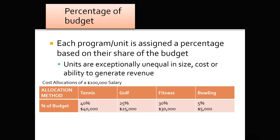Another way to allocate the indirect costs is percentage of budget — each program is assigned a percentage based on their share of the overall budget. This is used when units are unequal in size, cost, or ability to generate revenue. In this example, tennis takes 40% of the center's budget, golf 25%, fitness 30%, and bowling 5%. That means for the $100,000 salary: tennis covers $40,000, golf $25,000, fitness $30,000, and bowling only $5,000.